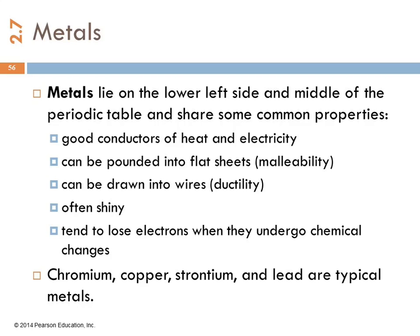Some common properties of metals, good conductors of heat and electricity. You can pound them into flat sheets. They're malleable. They're ductile, meaning they can be drawn into wires. They're often shiny. And this is the one that's most important for chemistry. They tend to form cations. They lose electrons.